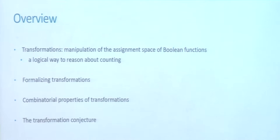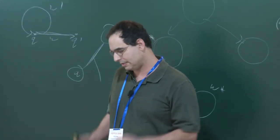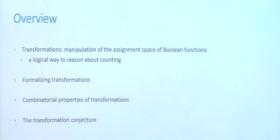I'm going to use this angle by manipulating the assignment space of a Boolean function that describes the Boolean formula, and therefore I'm going to define the concept of transformations. First, I'm going to formalize exactly what that is. Then I'm going to show some nice combinatorial properties of transformations that allow us to play with the solution space. Eventually, I'm going to present the transformation conjecture, which says that if there exists a polynomial-size transformation between every two formulas, then the complexity of counting can be brought down to some level in the polynomial hierarchy.